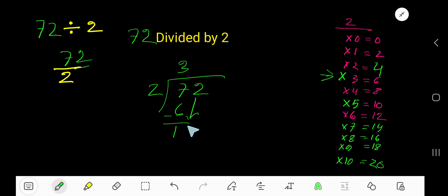Bring down this two. Two goes into twelve how many times? Six times. Six times two twelve, subtract zero. So your remainder is zero and quotient or answer is 36.